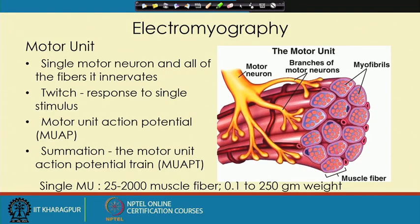Now we will go for the electromyography or EMG signal. We talked about the motor neurons — those motor neurons' axons terminate on the muscle fibres, and whenever a signal comes it actually stimulates that muscle. The muscle in response contracts, and that is what we call as twitch.